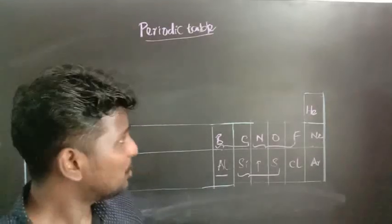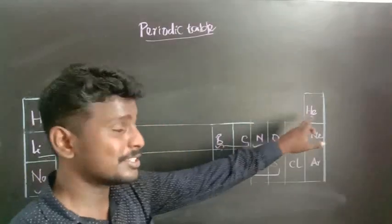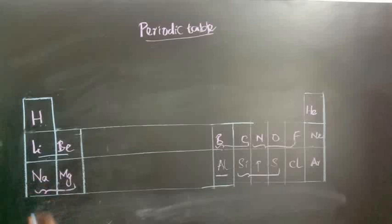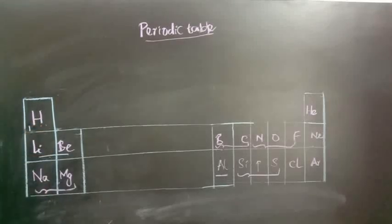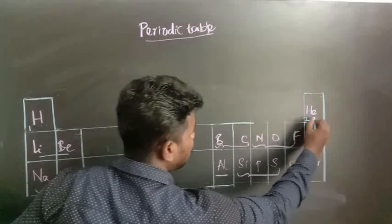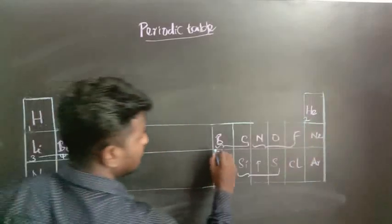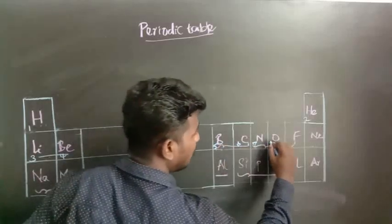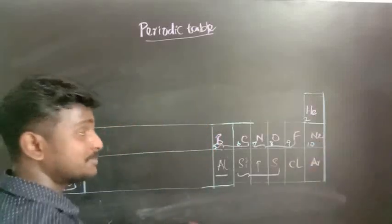You know it already — the elements are filled like this: hydrogen is the first element, helium is the second element. I have written the first 18 elements of the periodic table and I am going to give the atomic number of each. Hydrogen's atomic number is 1, helium has 2, lithium atomic number 3, and beryllium is 4. Now I am going to write the atomic numbers of the elements in this periodic table.